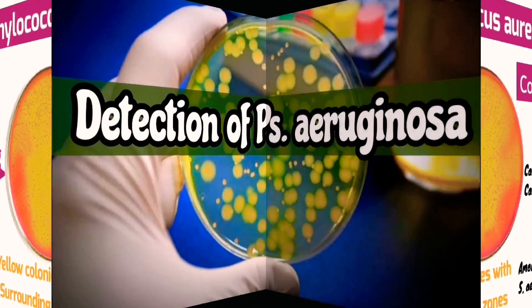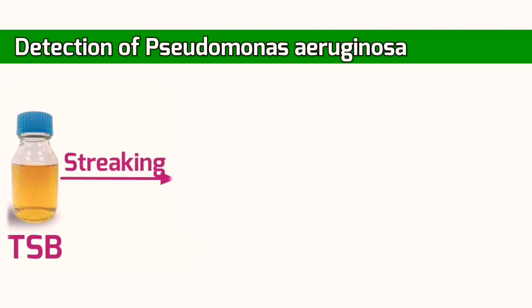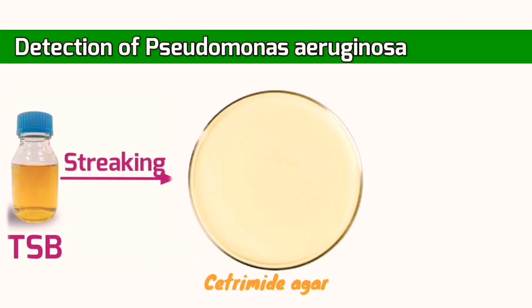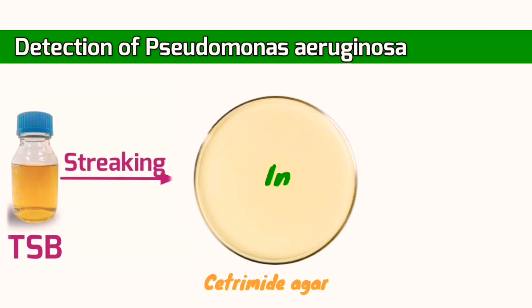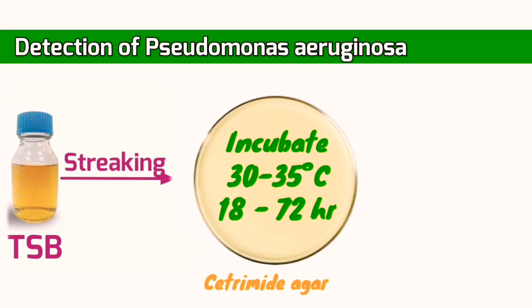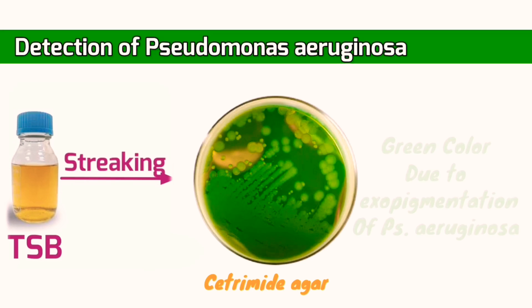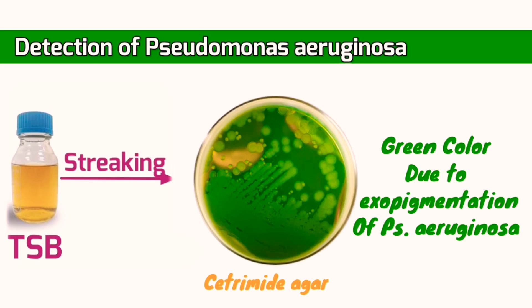Finally, for detection of Pseudomonas aeruginosa, streak directly from the incubated broth onto cetrimide agar and incubate plates at 30 to 35 degrees Celsius for one to three days. Growth of fluorescent green color indicates the presence of Pseudomonas aeruginosa.